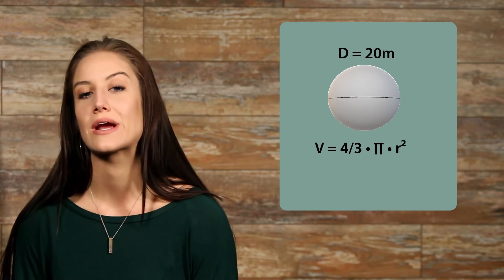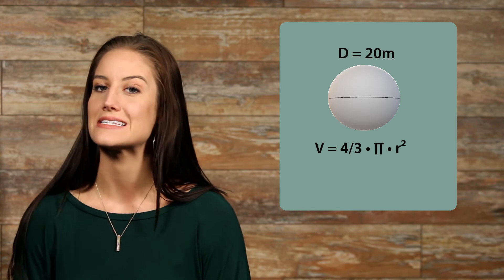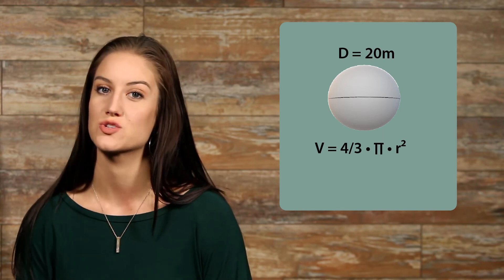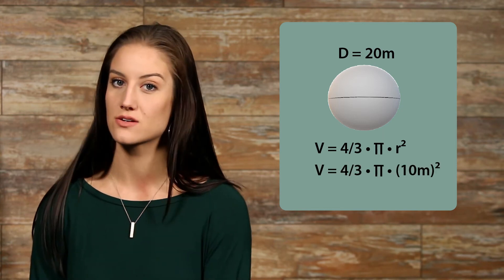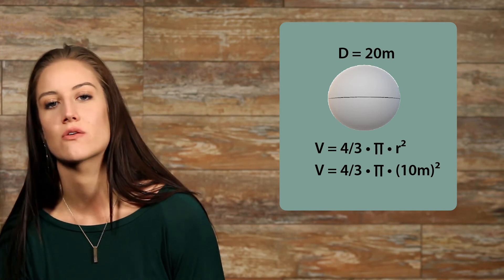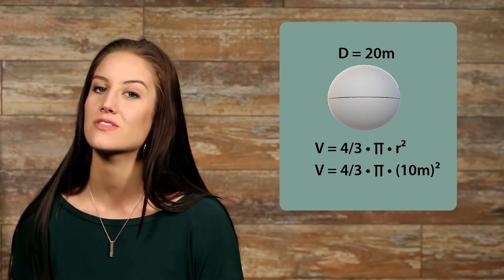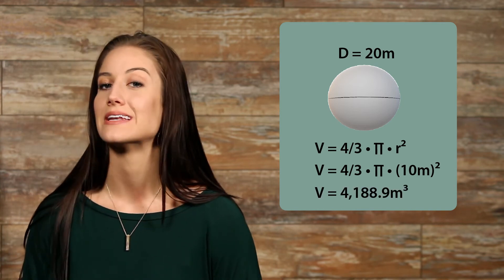We're looking for the radius, and we know that the radius is equal to half the diameter, which means that our radius is equal to 10 meters. When we plug 10 into our formula and solve, we get 4,188.9 meters cubed.